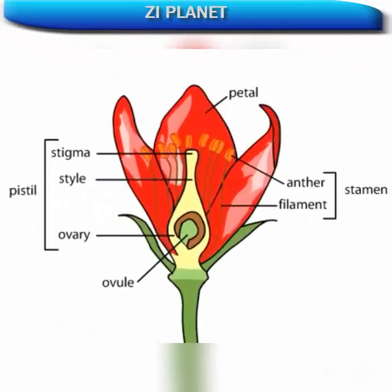Flowering plants undergo an unusual reproductive process in which there are two fertilization events rather than just one. This double fertilization takes place between cells produced in the male reproductive organs, the anthers, and the female reproductive organ, the ovule.